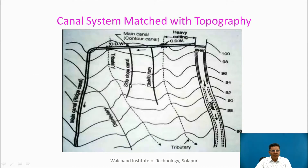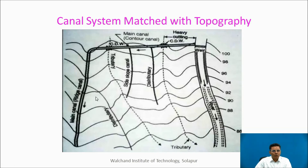We can get an idea of cutting and filling in a canal system through this figure. There is a river with a diverter, and the canal goes in a certain direction. Near the ridge, to save its head, it needs to go through a deep cutting. Here a distributor starts; there is also a side slope canal. Again, heavy cutting is needed, and then the main canal reaches another ridge. Where the canal goes in cutting and where it goes in filling can be understood from the layout of contours.